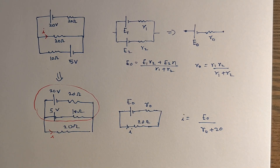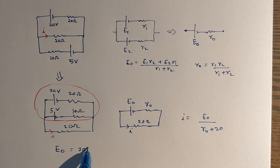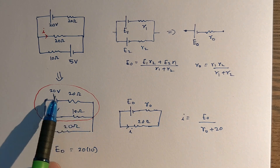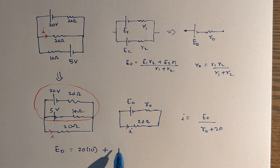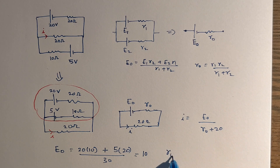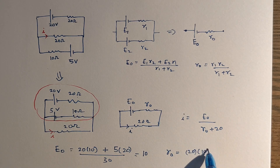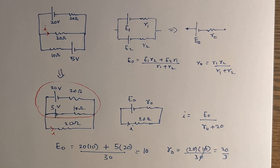E-naught equals (E1·R2 + E2·R1) / (R1 + R2). Taking E1 = 20V, R1 = 20Ω, E2 = 5V, R2 = 10Ω: E-naught = (20×10 + 5×20) / 30 = (200 + 100) / 30 = 300/30 = 10 volts. Similarly, R-naught = (R1·R2)/(R1+R2) = (20×10)/30 = 200/30 = 20/3 ohms.